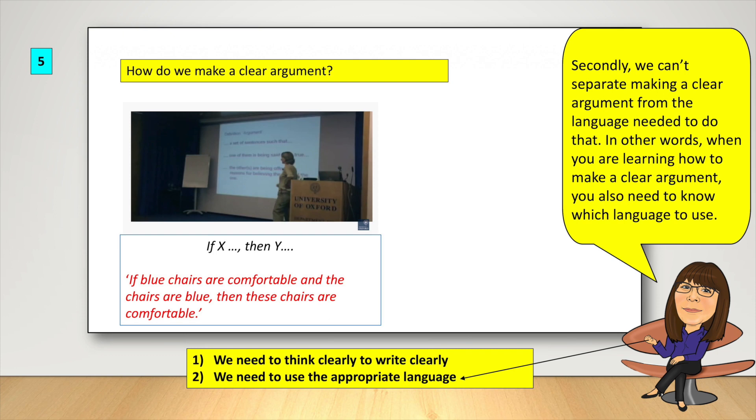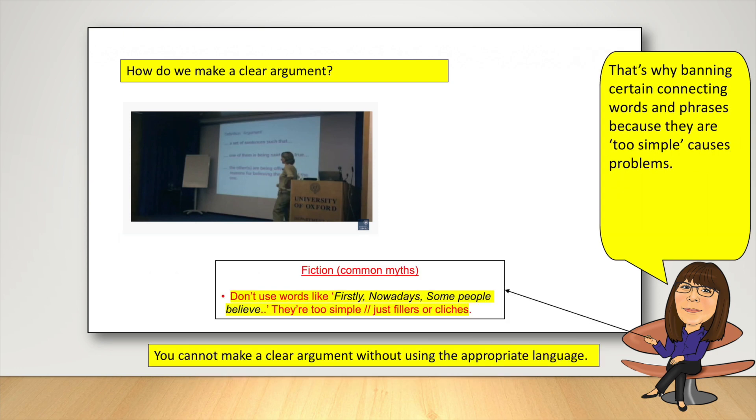In other words, when you're learning how to make a clear argument, you also need to know which language to use. That's why banning certain connecting words and phrases because they are too simple causes problems.